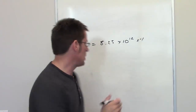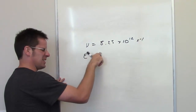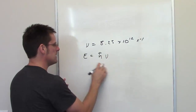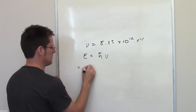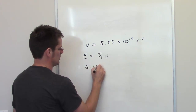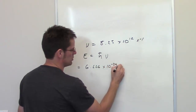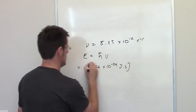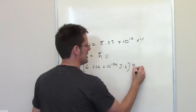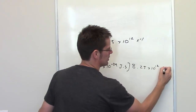According to Planck's equation, energy is equal to Planck's constant — this h with a hat — multiplied by frequency. This is a really simple problem where we write down Planck's constant, which is 6.626 times 10 to the negative 34th joules times seconds, and then substitute in nu for our frequency: 8.25 times 10 to the 12th inverse seconds.